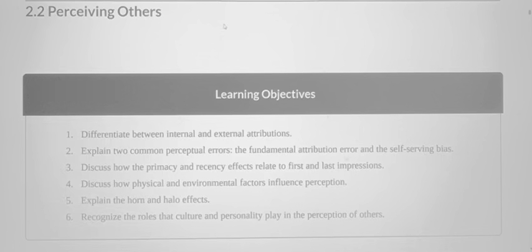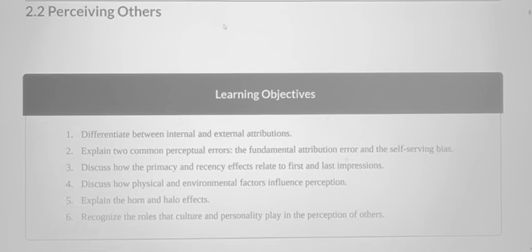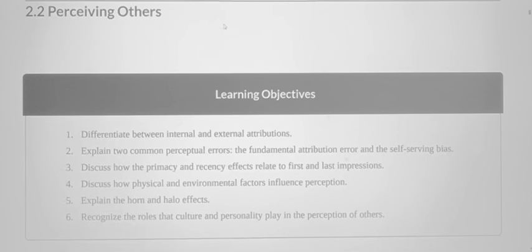Learning Objectives: 1. Differentiate between internal and external attributions. 2. Explain two common perceptual errors: the fundamental attribution error and the self-serving bias. 3. Discuss how the primacy and recency effects relate to first and last impressions. 4. Discuss how physical and environmental factors influence perception. 5. Explain the horn and halo effects. 6. Recognize the roles that culture and personality play in the perception of others.